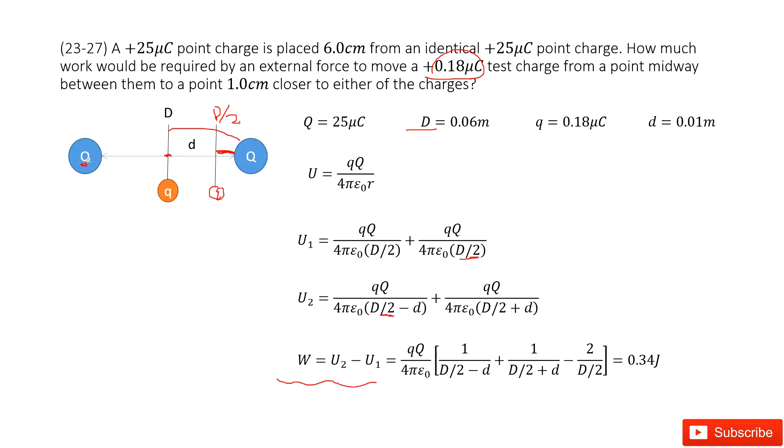And now another part. This left point charge with this test charge - the electrical potential comes from the test charge times the point charge divided by 4πε₀ times the distance, which is D over 2 plus this little d.